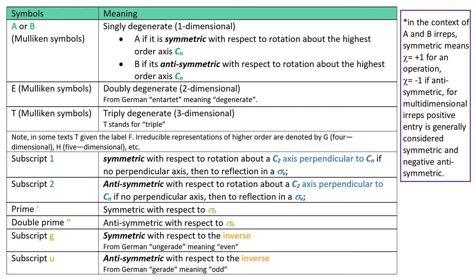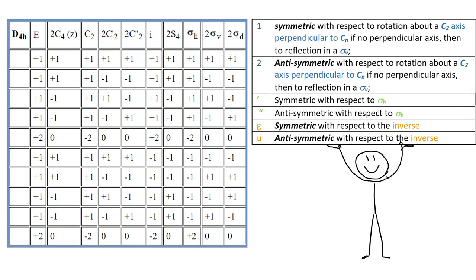The last symbols that we will mention are G and U. They are used to describe symmetric and anti-symmetric behavior with respect to inversion. So let's tackle some example.